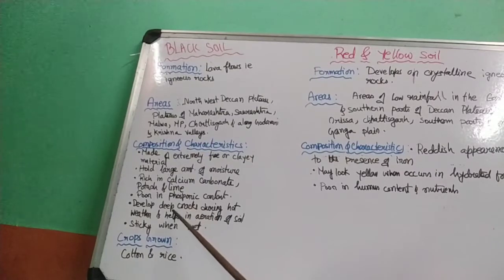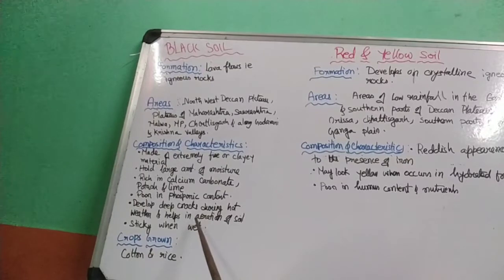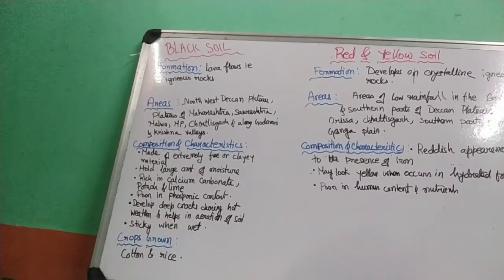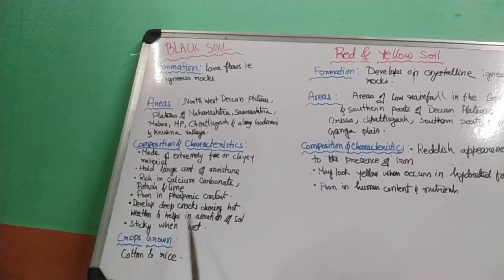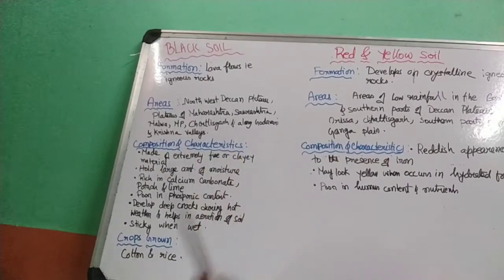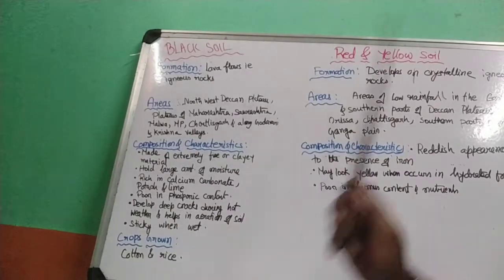Black soil develops deep cracks during hot weather, which helps in aeration — air gets inside the soil through the cracks. It becomes extremely sticky when wet. The major crops grown in black soil are cotton and rice, which is why it is also known as black cotton soil.